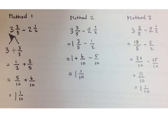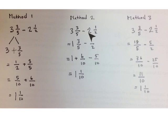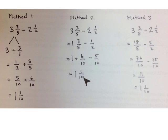So Method 1 starts with your whole number, subtracts all of the number we're taking away — all of 2 and 1 half — leaving us with 1 half, then adds that back to the fractional part of our mixed number. In Method 2, we subtract the whole numbers: 3 take away 2 is 1. Then we have 3 fifths take away 1 half. Getting a common unit: 3 fifths is the same as 6 tenths, and 1 half multiplied by 5 fifths is 5 tenths. 6 tenths take away 5 tenths is 1 tenth, giving 1 and 1 tenth again.